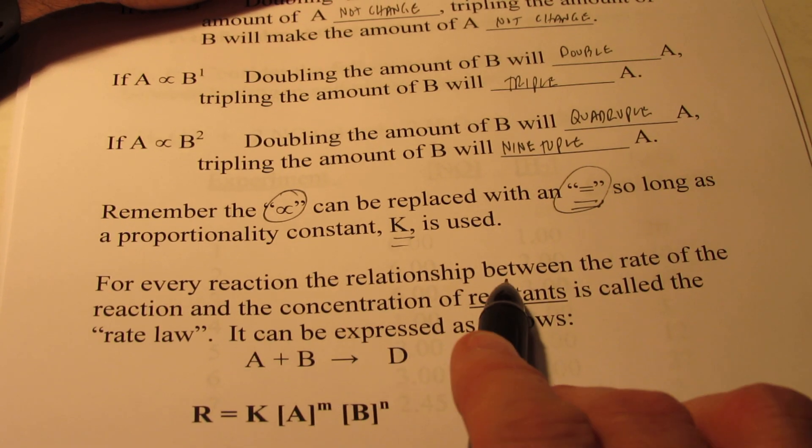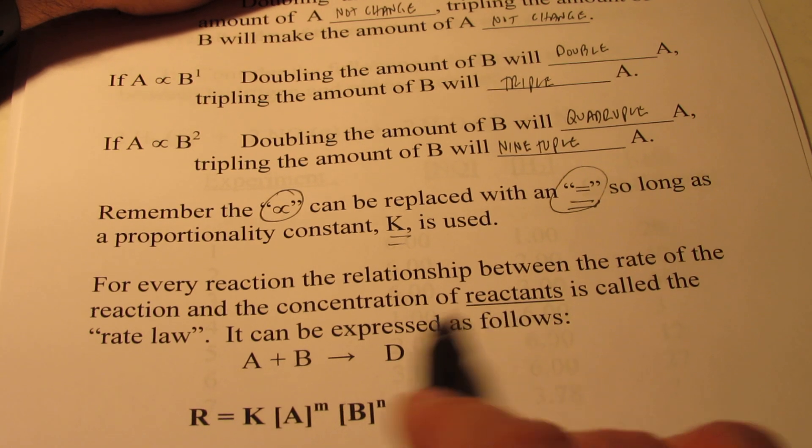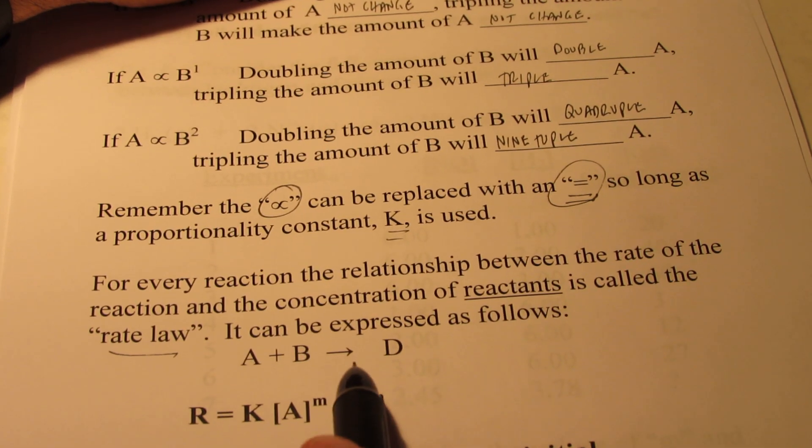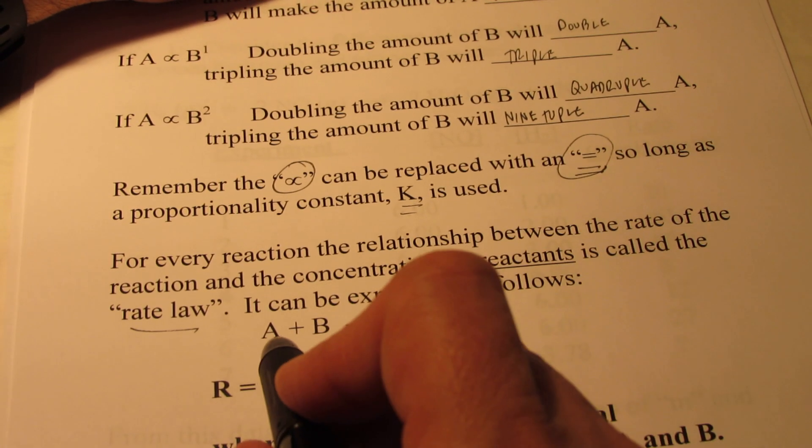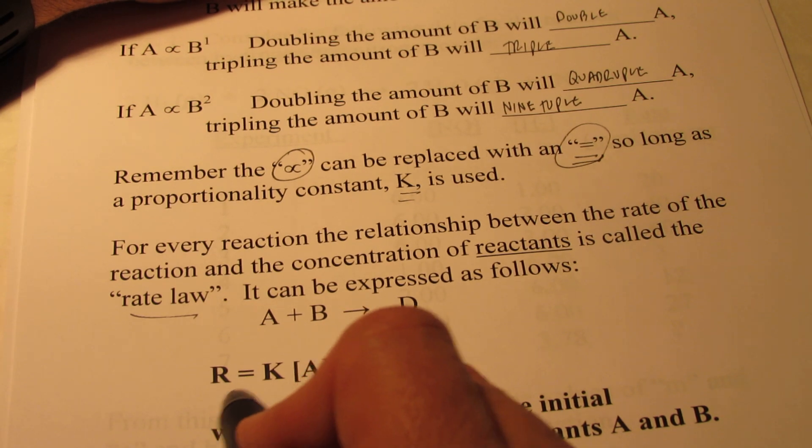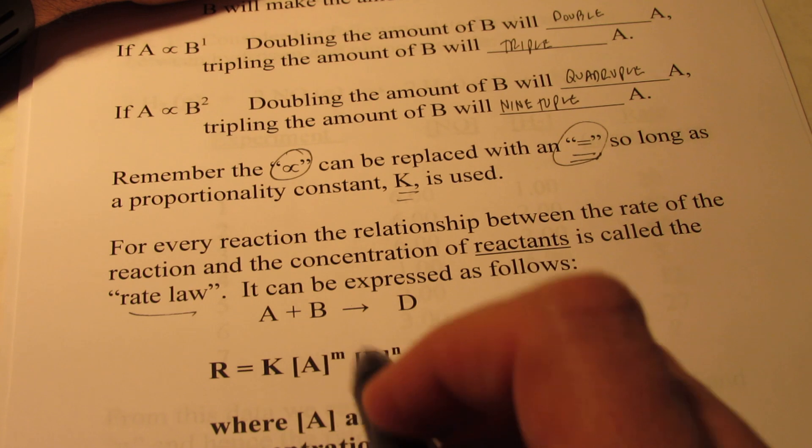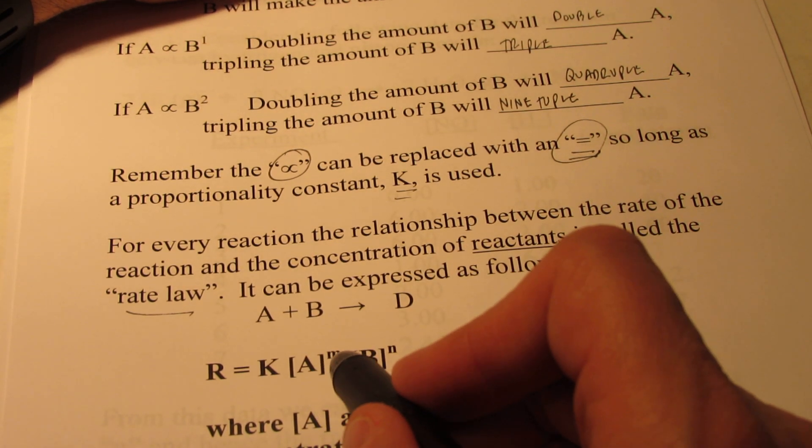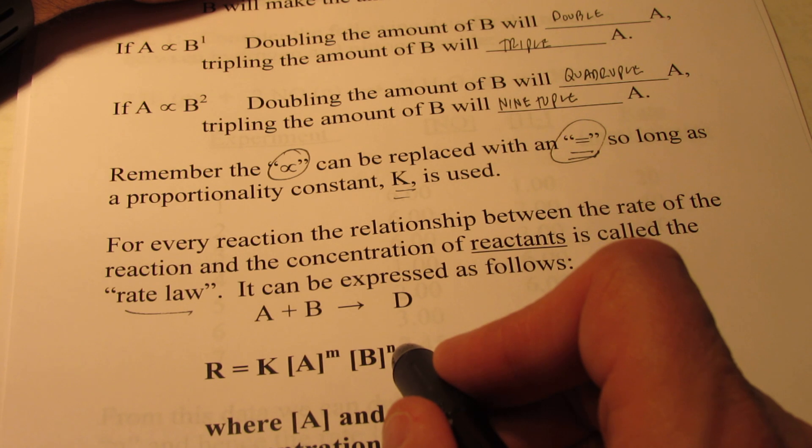For every chemical reaction, the relationship between the rate of the reaction and the concentration of the reactants is called a rate law. Rate laws can be expressed as follows. If I have a reaction where A and B react to form compound D, the rate of the reaction is proportional to, or equals, K times the concentration of A to some power M, and B to some power N.